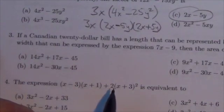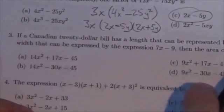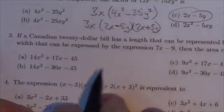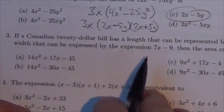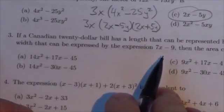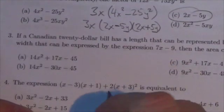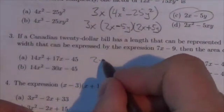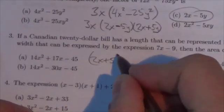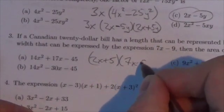If a Canadian $20 bill has a length that can be represented by the expression 2x plus 5, and you can't see that, it's off the screen there, and a width that can be expressed by 7x minus 9, then its area has got to be 2x plus 5 times 7x minus 9.